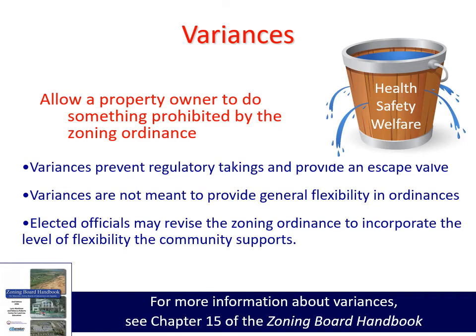Variances allow a property owner to do something prohibited in the zoning ordinance. So why do we have variances? Variances are in place to prevent regulatory takings and provide an escape valve. Takings occur when government restrictions go so far as to allow no reasonable use of a property. Variances are not meant to provide general flexibility in ordinances, as this would result in many leaks in the bucket and the purposes of the zoning ordinance would be lost. If they feel it's prudent, elected officials may revise the zoning ordinance to incorporate the level of flexibility the community supports.